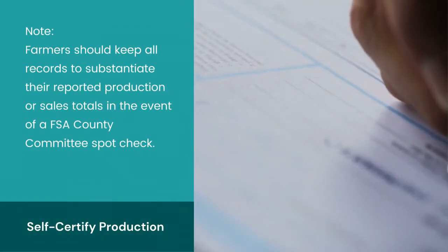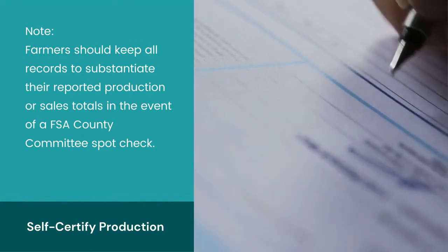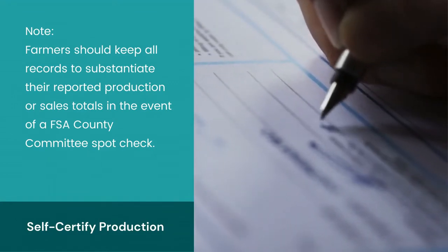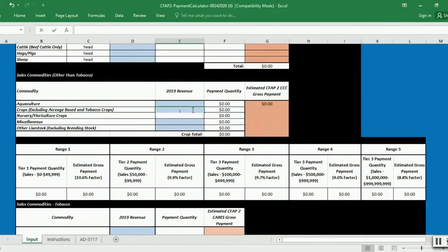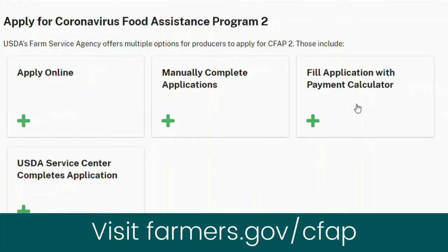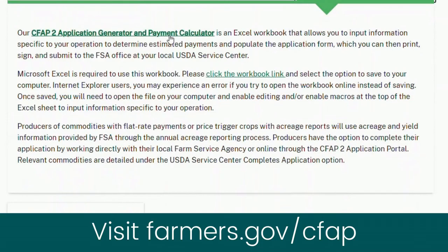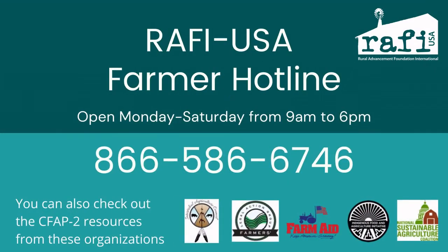Across all three payment methods, farmers are asked to self-certify their production or sales amounts. Check out our next videos for more information on the application process and the required documentation. We also show several real-world examples of how much you could receive through CFAP II using different commodities as case studies. To get a real sense of how much your CFAP II payment might be, go to the USDA's website, farmers.gov/CFAP, to download the payment calculator. And if you need extra help determining how much of a payment you could receive through CFAP II or need assistance with your application, we encourage you to call the RAFI USA hotline toll-free at 586-6746.